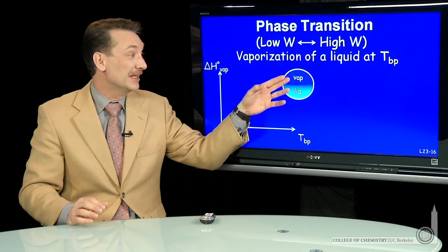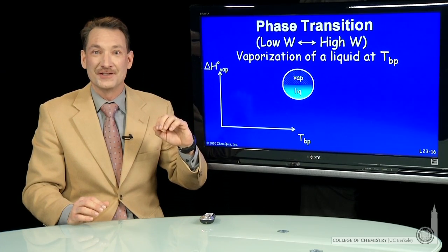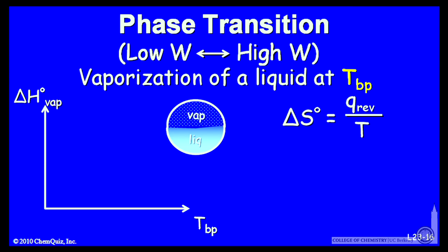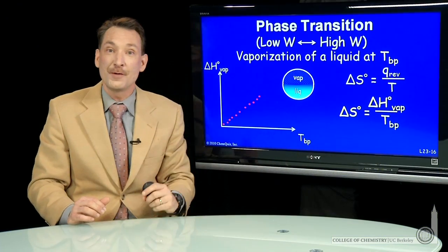So if we talk about the liquid-vapor phase transition at the boiling point, we can take the thermodynamic definition of entropy - the heat evolved at a specific temperature - as the enthalpy of vaporization (that's the state function that describes the heat involved with that process) over the boiling point.